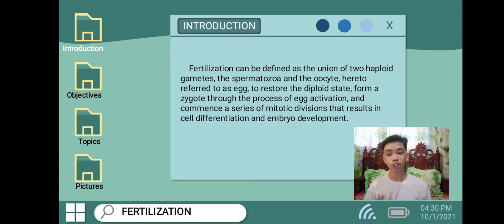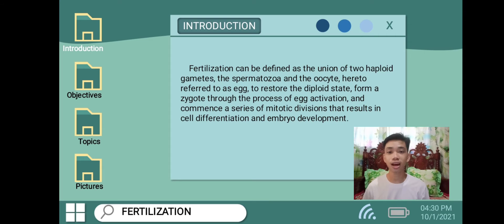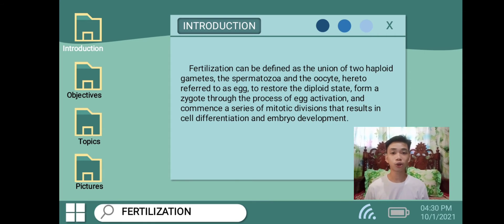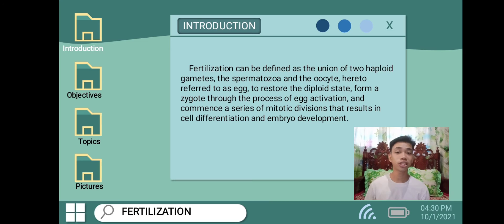Next is the spermatozoa and the oocytes. Spermatozoa refers to the sperm cell while oocytes refers to the egg. To restore the diploid state, the egg will go through a process called egg activation and commence a series of mitotic divisions that result in cell differentiation and the development of an embryo.